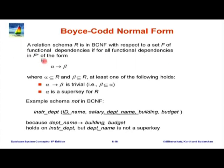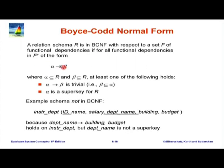They may differ in other attributes for the instructor part, but they may have the same department name, and as a result the building and budget got duplicated. If you want to remove this redundancy, we put the following requirement on a relation. We say that a relation schema R is in BCNF with respect to a set F of functional dependencies if, for all functional dependencies in F-plus (the closure), where alpha is a subset of R and beta is a subset of R, we consider functional dependencies where both the left and right side are part of R.